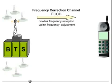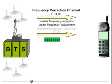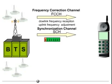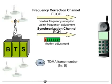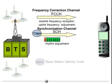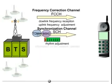The synchronization channel, SCH, then helps the mobile station to synchronize itself to time slot 0 sent out by the BTS. This means the mobile station must adjust to the rhythm given by the BTS. The SCH contains the TDMA frame number as well as the base station identity code, containing basic information about the network operator that can be compared with the info stored on the SIM card.